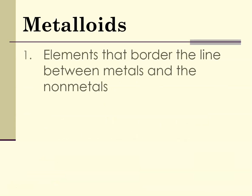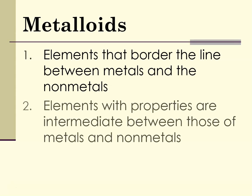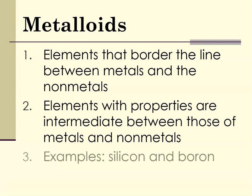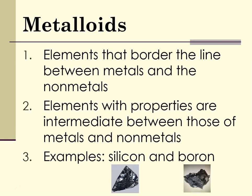The metalloids are elements that border the line between metals and nonmetals, and they have properties that are intermediate between the two — they have properties of both. Examples are silicon and boron. Whenever you hear about semiconductors, those are metalloids.